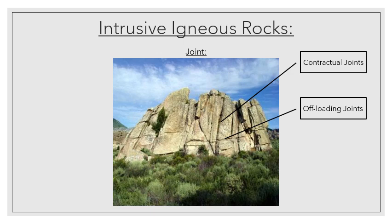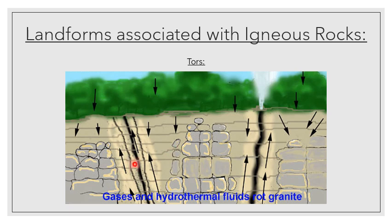We're going to go into the process of formation of tors. We need to consider the fact that a batholith is buried at some point in time. We've got our big granitic batholith below the surface of the earth. All along these contractual joints and offloading joints, we will find a process called chemical weathering. These different joints act as channels which allow water to seep through, thereby allowing chemical weathering to take place along these joints, forming core stones.